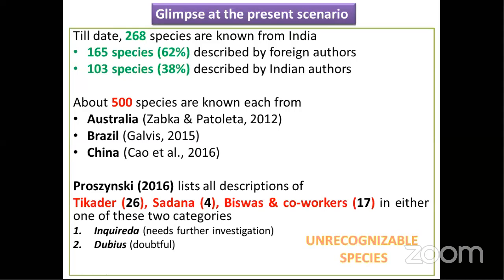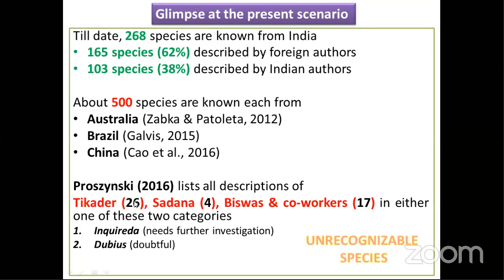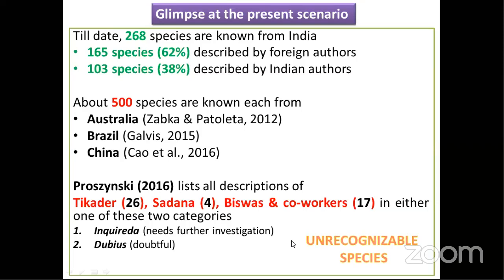Since India has different hotspots of biodiversity like the Western Ghats and the northeastern region, the expected diversity can be more. Proszynski in 2016 listed all descriptions of Tikader (26 species), Sadhana (4 species), and Biswas and coworkers (17 species) under the categories of 'inquirenda' — which need further investigation — and dubious/doubtful. These have been categorized as unrecognizable species that cannot be identified unless we go back and study the type specimens. This is the present situation of Indian salticids.